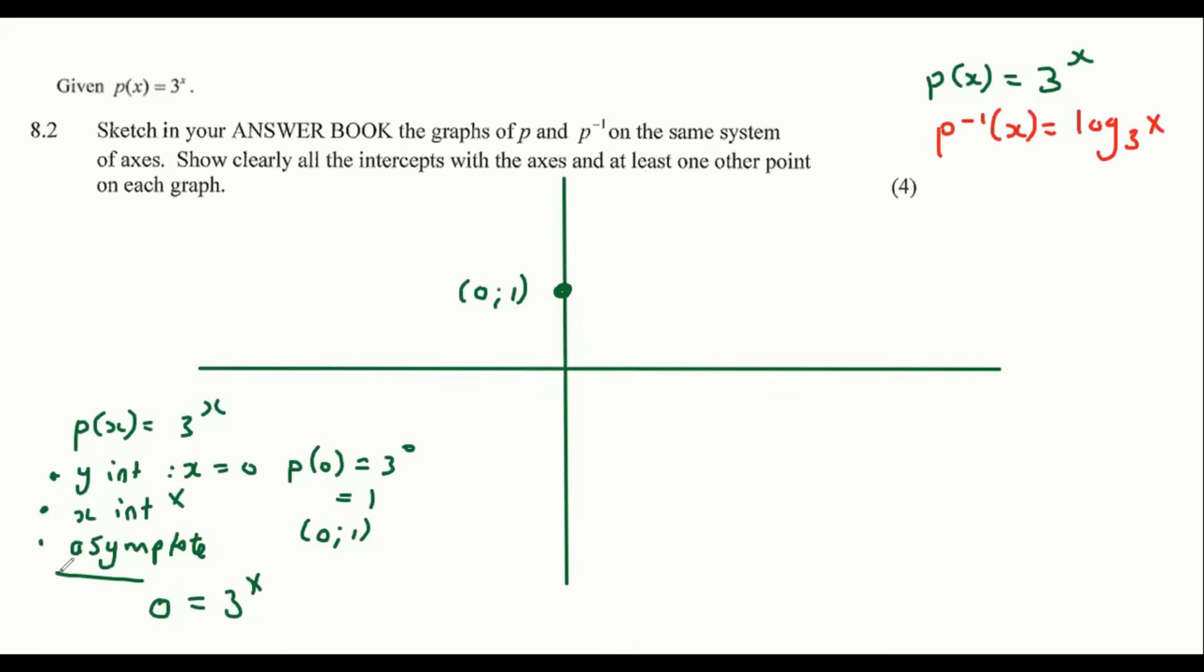So we go to the next one, the asymptote. The asymptote of an exponential is this number over here. That is the asymptote. So if they don't have a number there, then the asymptote is technically on the X axis. So the asymptote is on the X axis. You don't have to draw it. I'm just showing you guys.